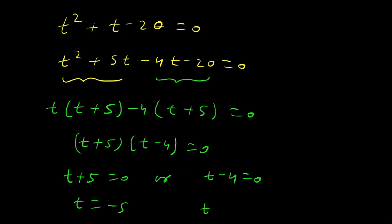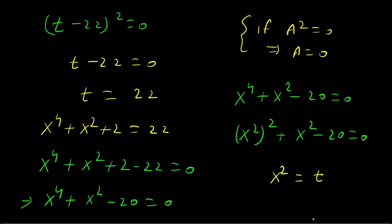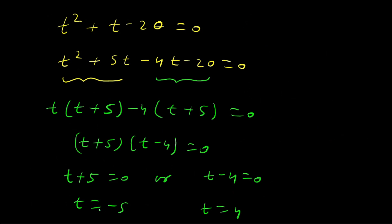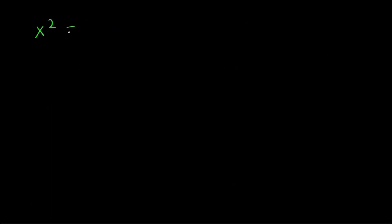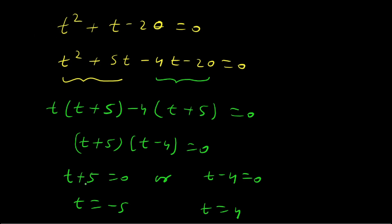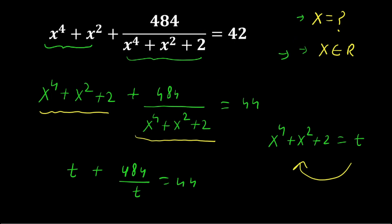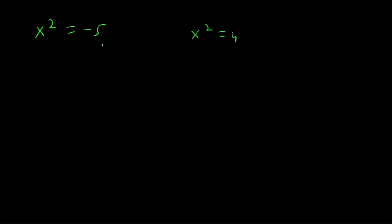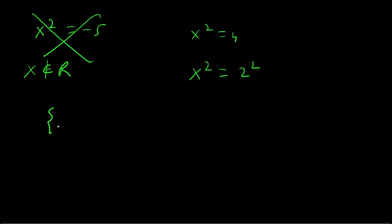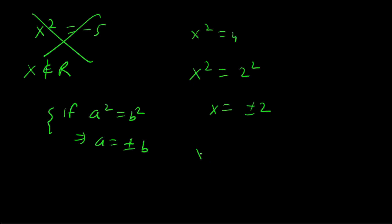Therefore t + 5 = 0 or t − 4 = 0, giving t = −5 or t = 4. Since t = x², we get x² = −5 or x² = 4. Since x is real, x² must be positive, so x² = −5 is rejected. From x² = 4 = 2², applying the rule a² = b² implies a = ±b, we get x = ±2.